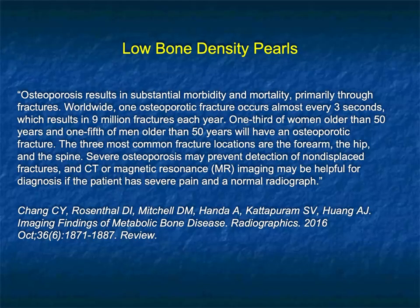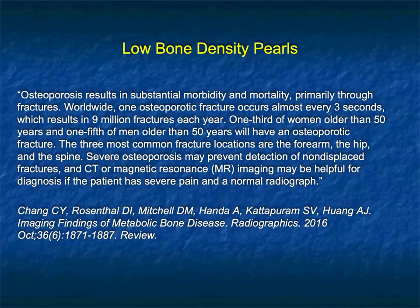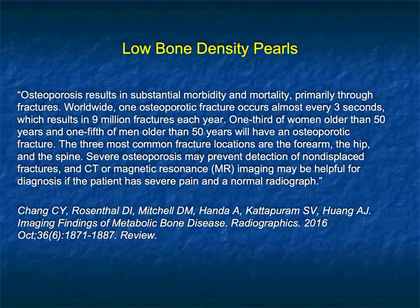A pearl: osteoporosis results in substantial morbidity and mortality, primarily through fractures. Worldwide, one osteoporotic fracture occurs almost every three seconds, resulting in nine million fractures each year. One third of women older than 50 and one fifth of men older than 50 will have an osteoporotic fracture. The three most common fracture locations are the forearm, the hip, and the spine. Severe osteoporosis may prevent detection of non-displaced fractures, and CT and MR may be helpful for diagnosis when the patient has severe pain and a normal radiograph.